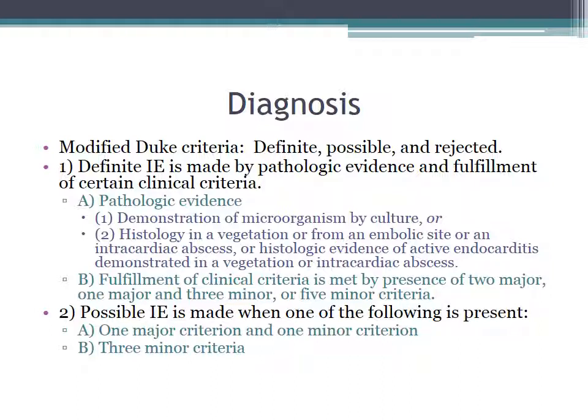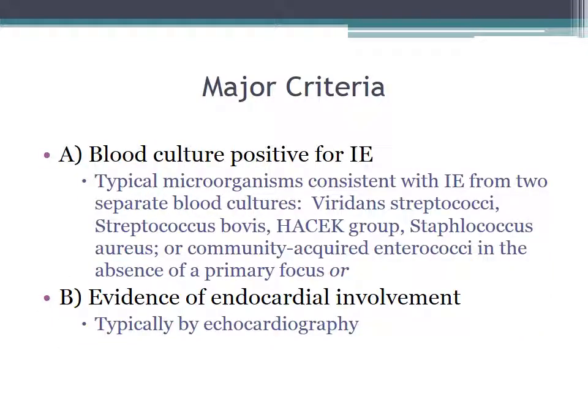Possible infective endocarditis is made when one of the following is present: one major criteria and one minor, or three minor criteria. So let's turn to the major criteria.